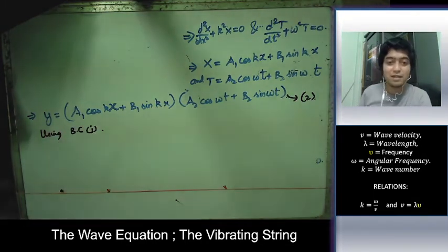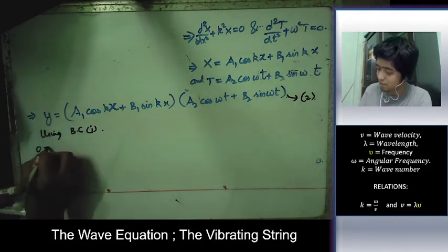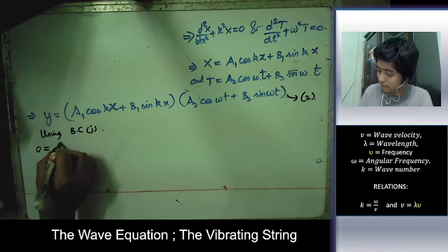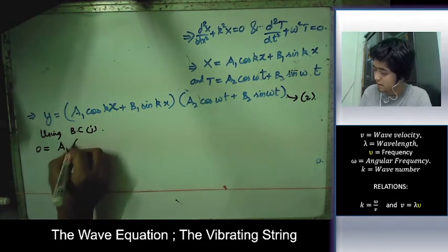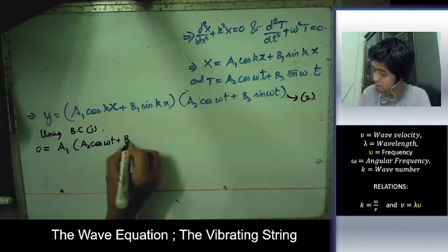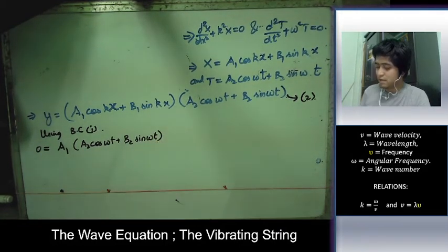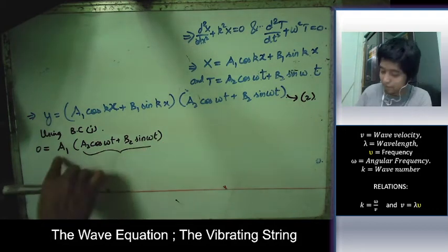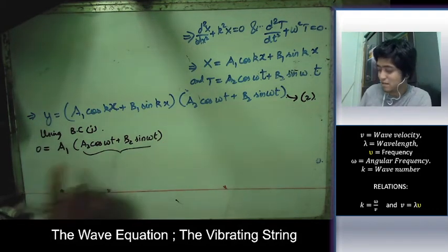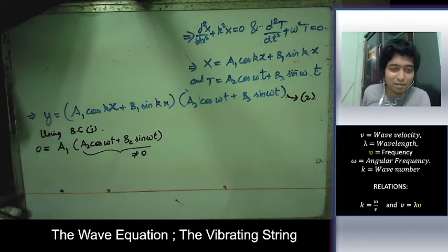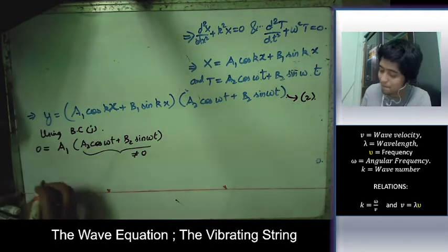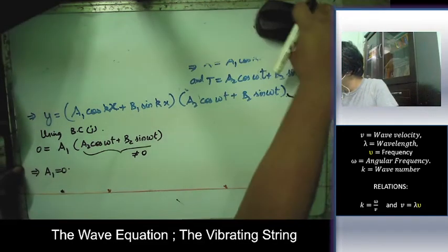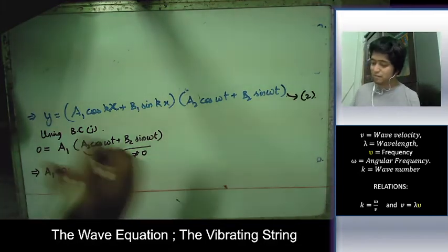Applying boundary condition 1 (x=0, y=0): substituting gives A₁·cos(0)·[A₂cos(ωt) + B₂sin(ωt)] = 0. Since this holds for all t, and the bracketed term is not always zero, we conclude A₁ = 0.